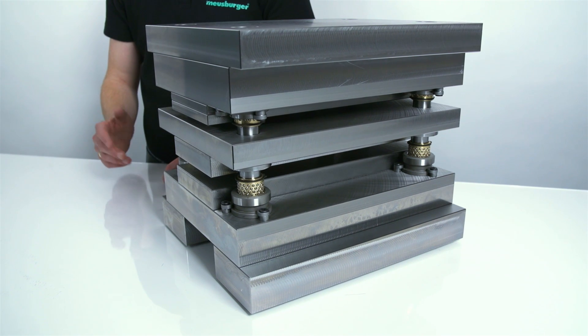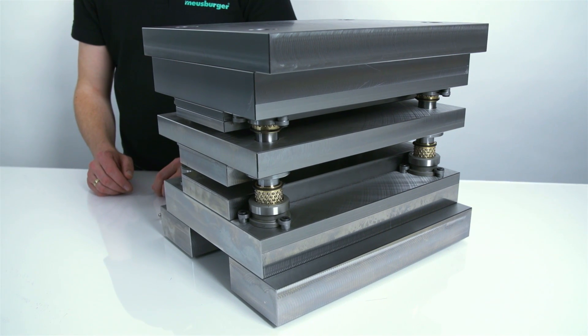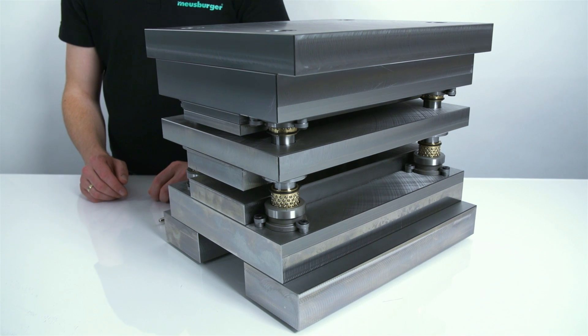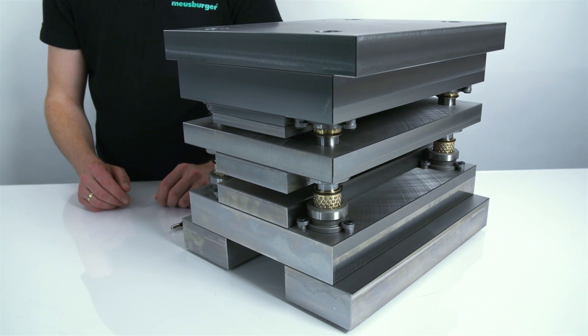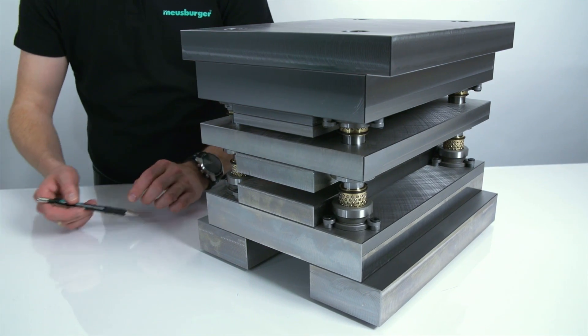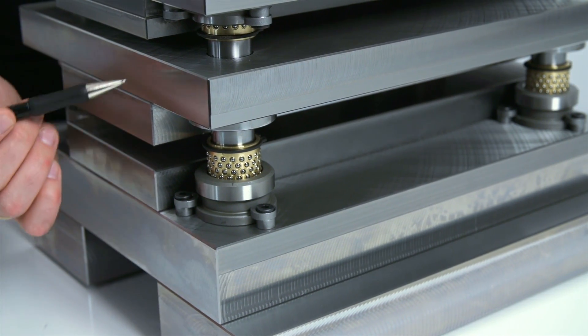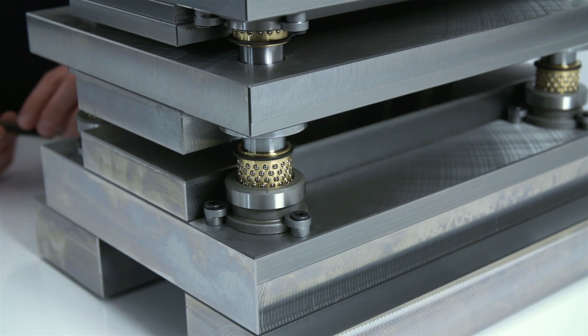The Precision Die Set is mainly used for thin sheets and precise stamping processes. It is particularly suitable for progressive dies with increased accuracy requirements. This has to do with the fixing position of the guide pillars.